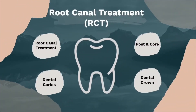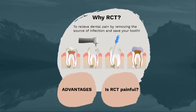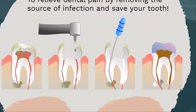Let us now look at root canal treatment. Why is RCT done? It is done to relieve dental pain by removing the source of infection and to save your tooth. In most cases, RCT is done in one or two visits. In the first visit, the infected pulp will be removed. In the second or maybe third visit, cleaning and filling will be done. The RCT patient should expect a few visits before treatment is completely done.